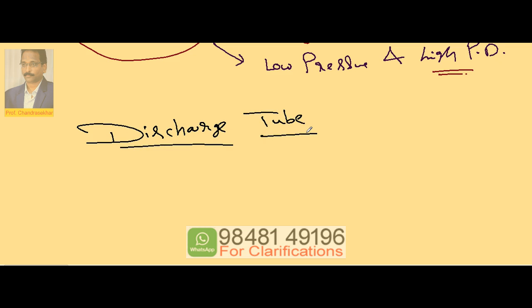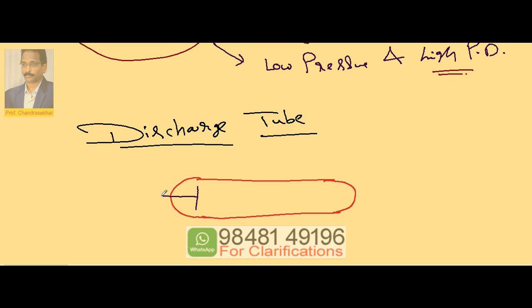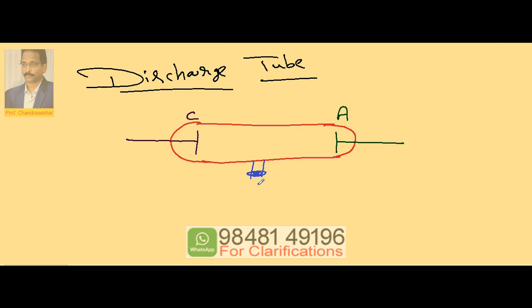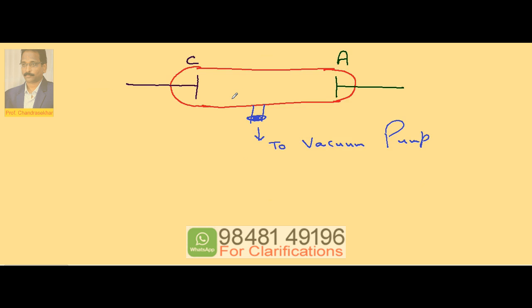One can study and observe the discharge phenomena by maintaining low pressure and high potential difference. This can be studied using a glass tube called a discharge tube. A discharge tube is a cylindrical glass tube containing a cathode and an anode. One side is the electrode called cathode C; the other side, denoted by A, is called anode. A potential difference is maintained between them. The tube is connected to a vacuum pump so you can decrease the pressure inside.